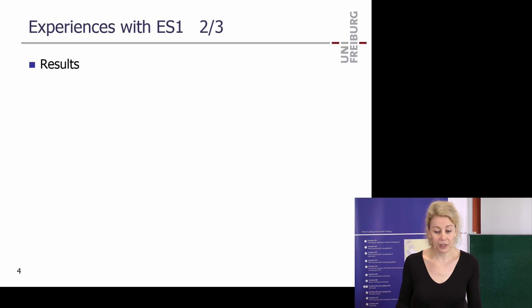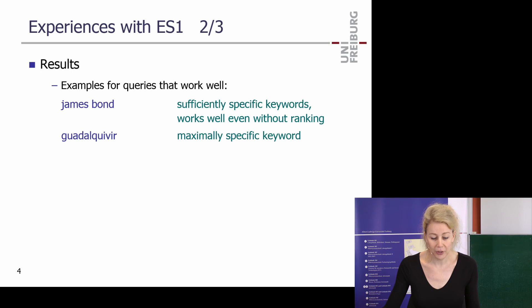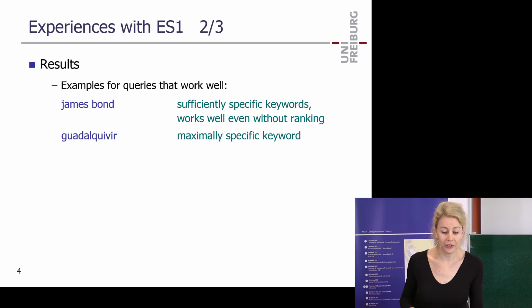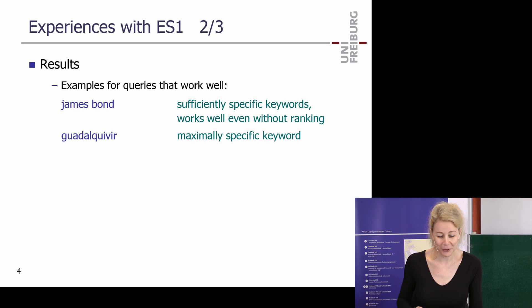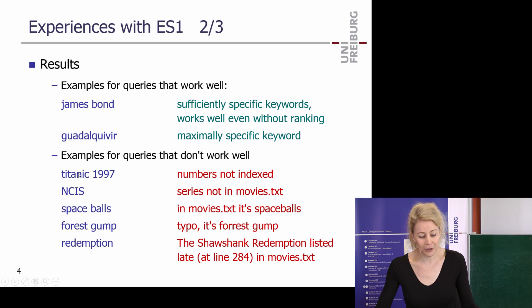Here are some queries that worked well from your experiences. James Bond worked well — why? Because the keywords are sufficiently specific. Even without ranking, you get all the James Bond movies because 'Bond' by itself is already specific. If you have a super specific keyword that is apparently the name of the movie, it also works because there's only one document containing that word. Here are some examples of things which didn't work well — numbers were not indexed.